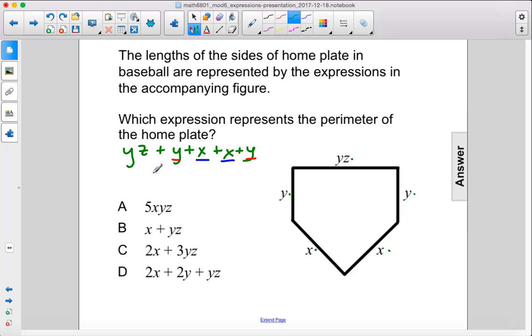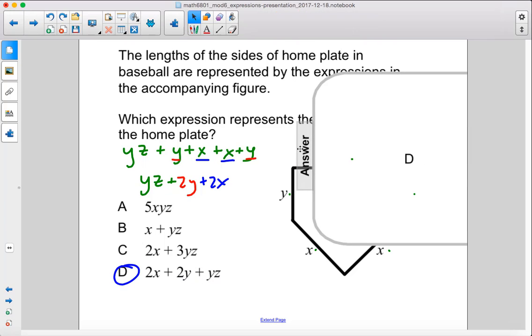So when we add the two y's together, one y plus one y gives us 2y, and then we have one x plus one x gives us 2x. So 2x plus 2y plus yz is our perimeter. The answer is D.